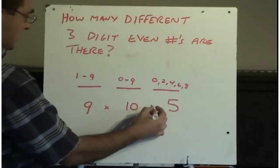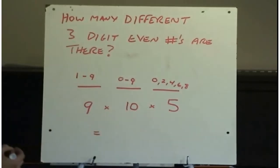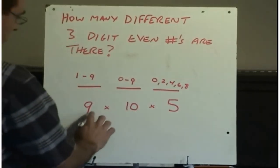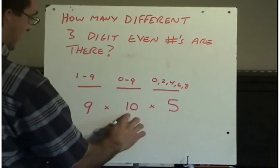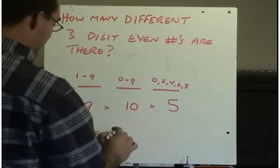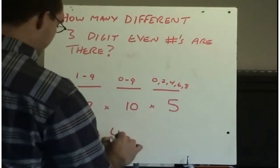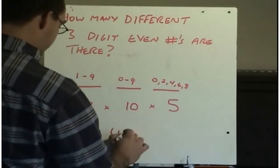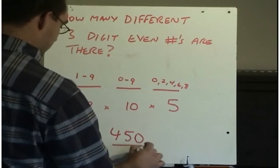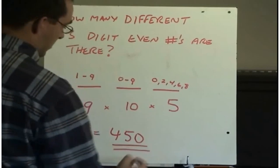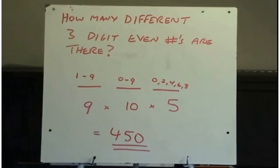So with nine choices for the first digit, ten for the second, and five for the third, the total number of three-digit even numbers is nine times ten, which is ninety, and ninety times five equals four hundred and fifty.